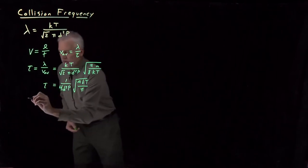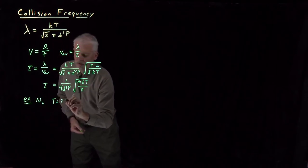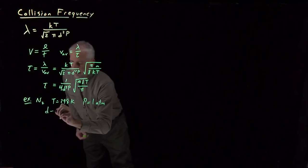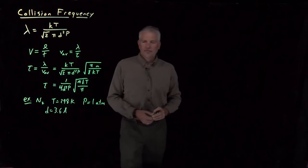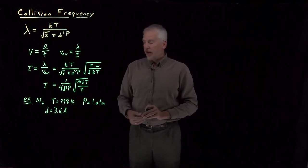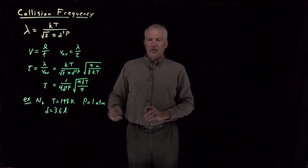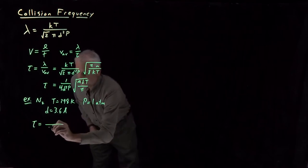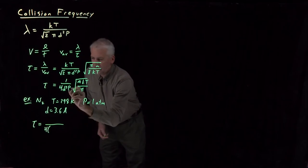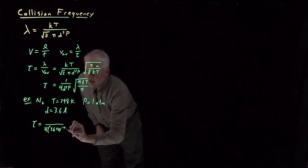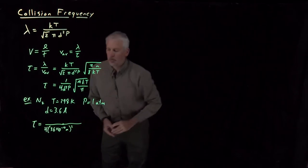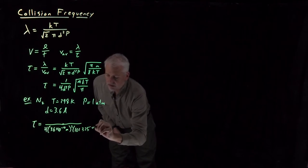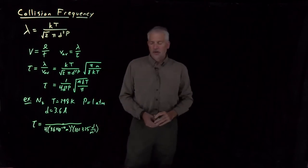We can work a quick example. For nitrogen at 298 K and 1 atmosphere, the diameter of a nitrogen molecule treated using kinetic theory is about 3.6 angstroms. To find the average collision time, we plug in: d = 3.6 × 10⁻¹⁰ meters, squared; pressure = 101,325 pascals (joules per cubic meter); and for mass, we need the mass of one molecule, converting molar mass from grams per mole to kilograms per molecule using Avogadro's number (6 × 10²³ molecules per mole).